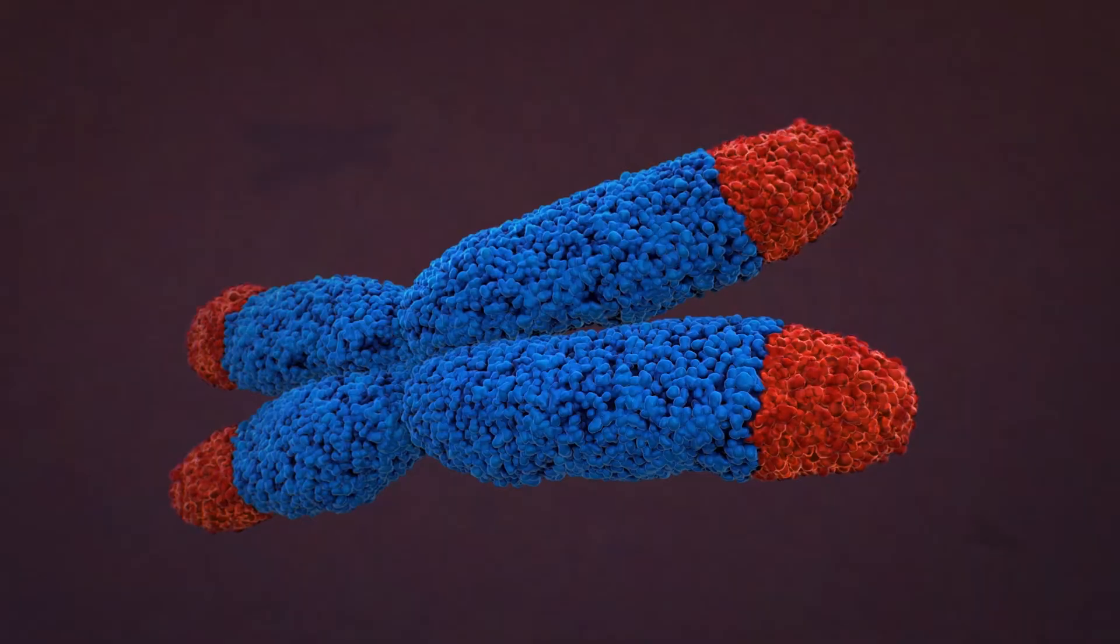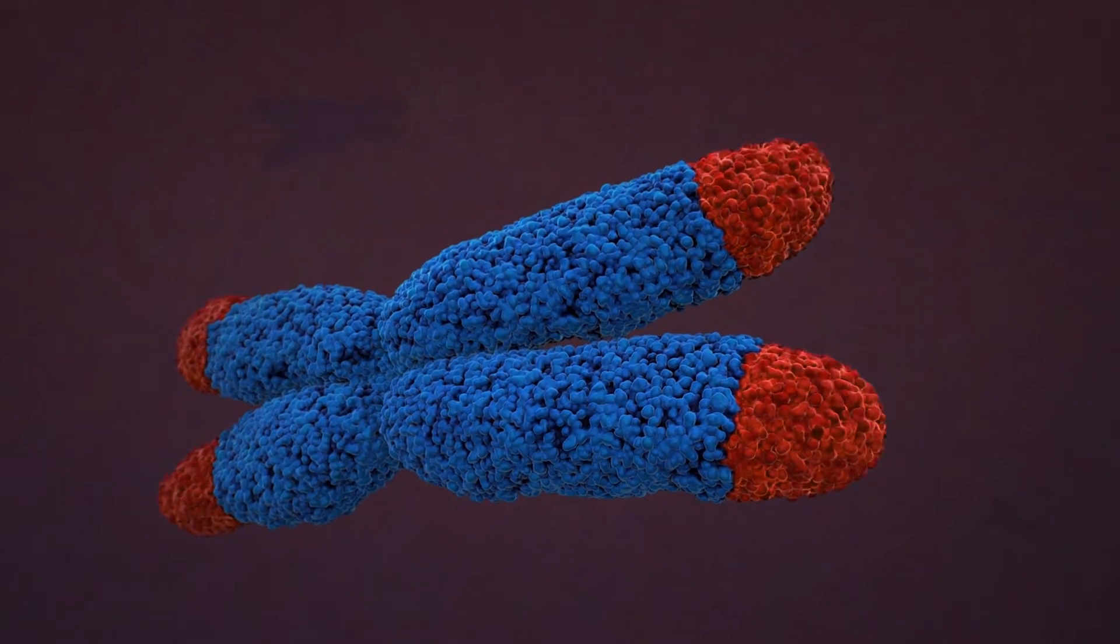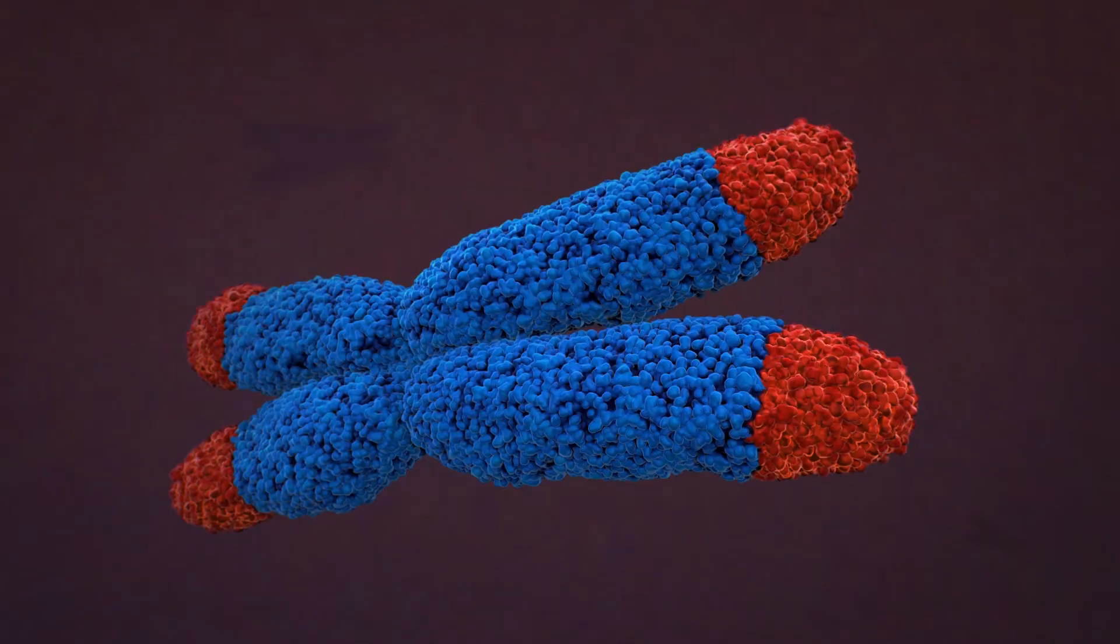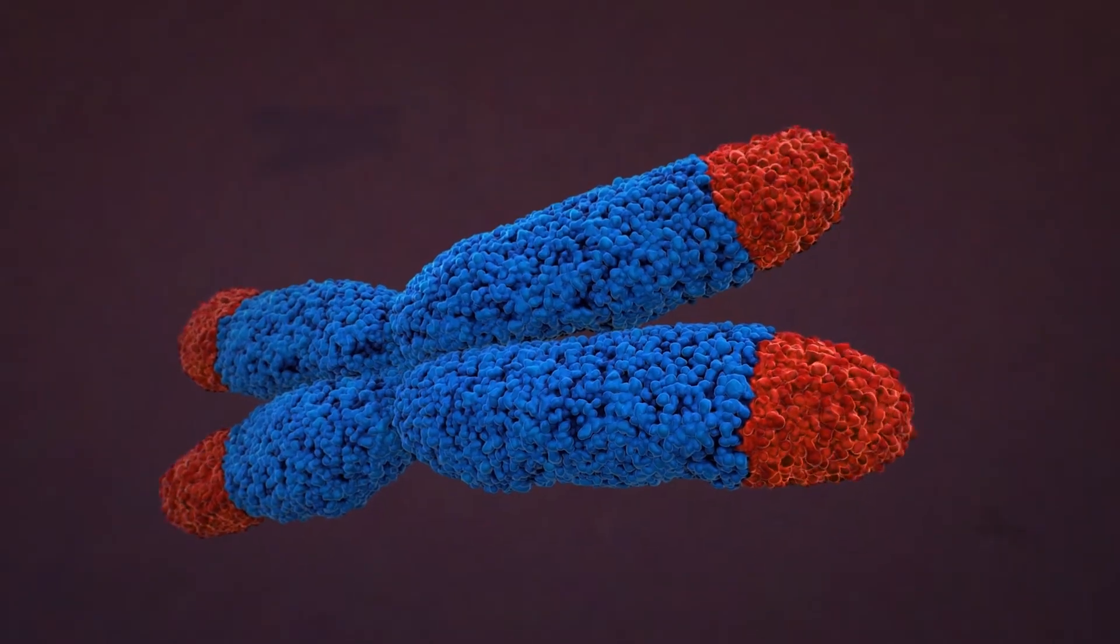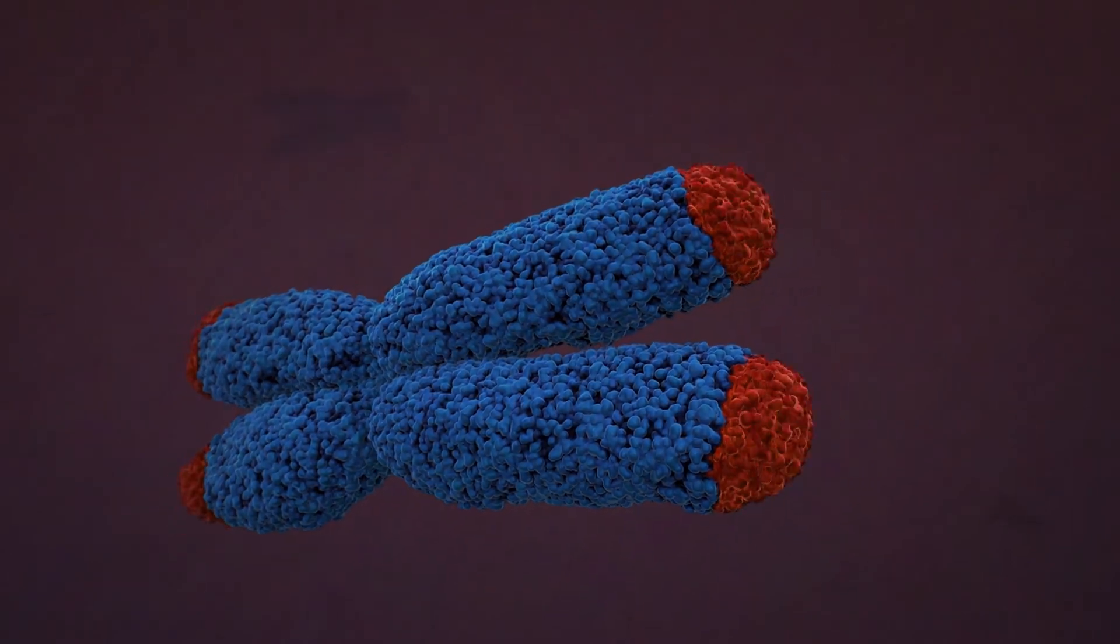However, with this experiment, Hayflick found that after each division, the telomeres found at the end of chromosomes would progressively shorten, and after reaching a critical point, the cells would stop dividing.